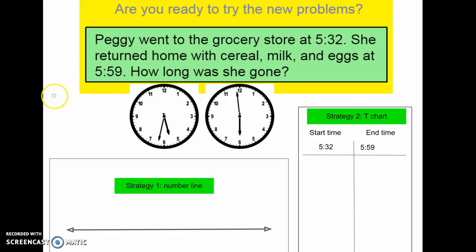One of those things is start time, one of those things is elapsed time, and one of those things is end time. Being able to find these three things in a word problem is going to help us know what's missing and what we're looking for.